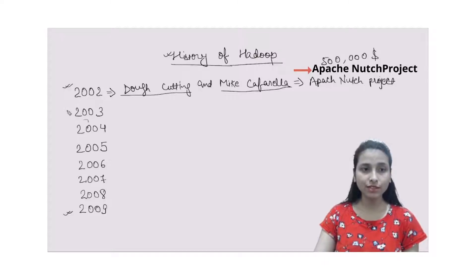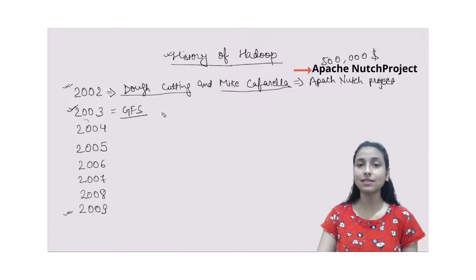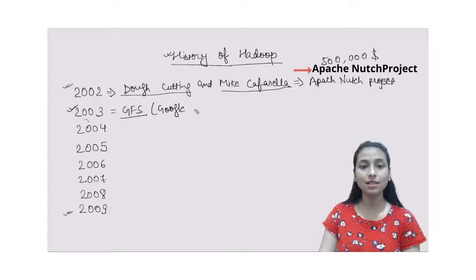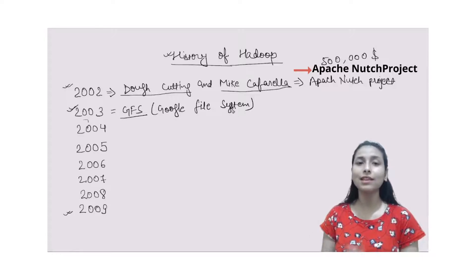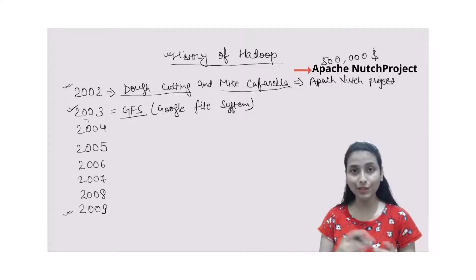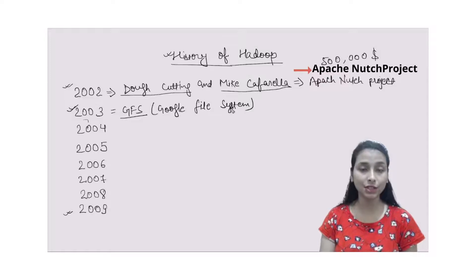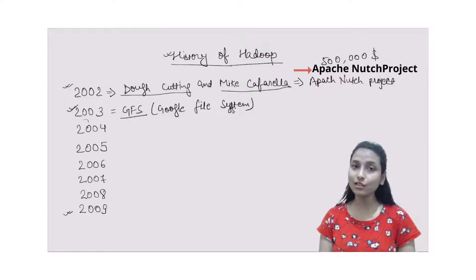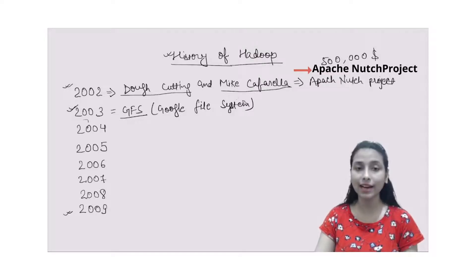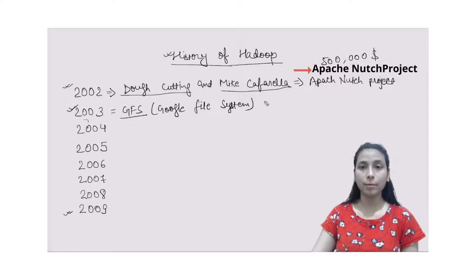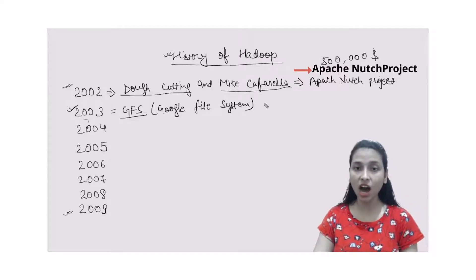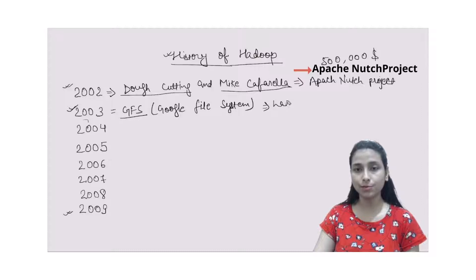In 2003, Google released a research paper called GFS — the Google File System. In this paper, Google detailed the architecture of GFS and offered a solution for storing a huge amount of data in a distributed manner. This research paper actually proved to be a half solution for their Apache Nutch Project.